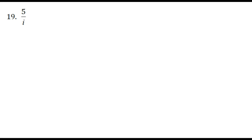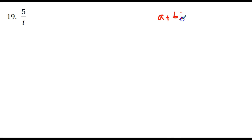Often in math we do what is referred to as rationalizing the denominator, which means rewriting expressions so there's no square roots in the denominator. Here we're going to do something similar and rewrite this expression so we don't have i in the denominator. Our goal is to get this number 5 divided by i into complex number form a plus bi.